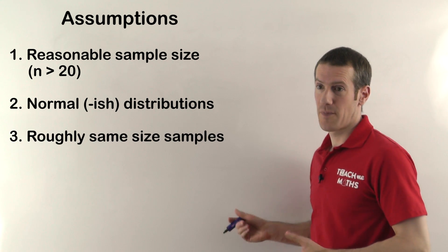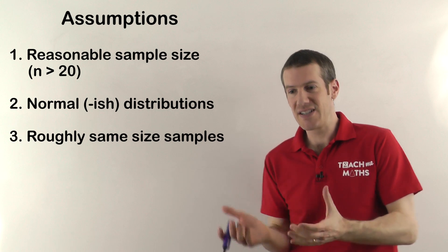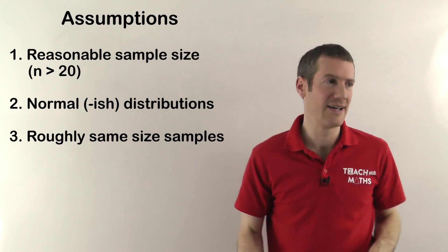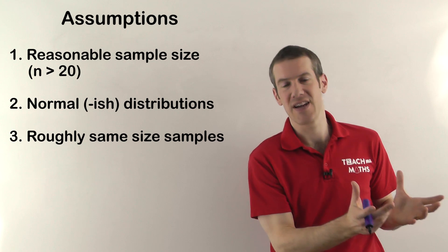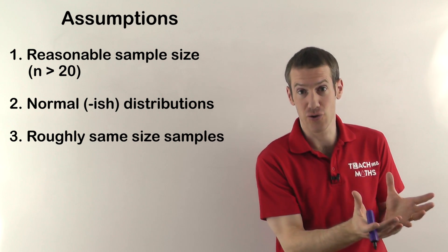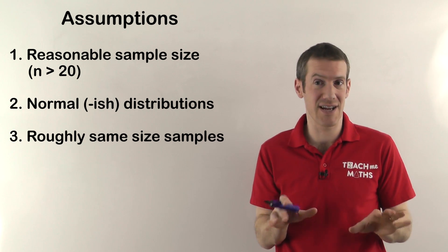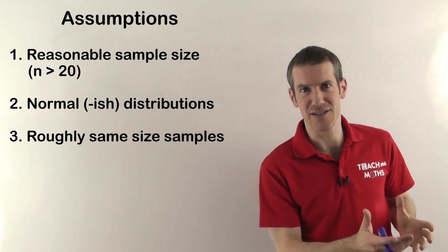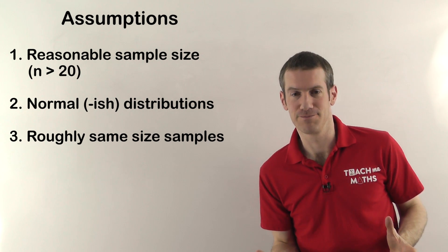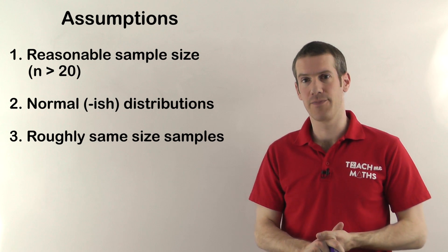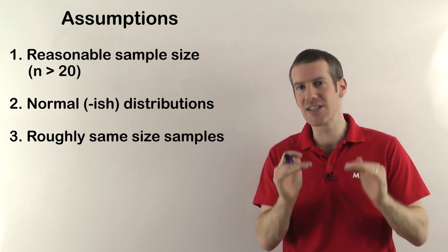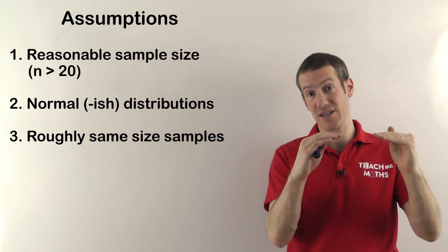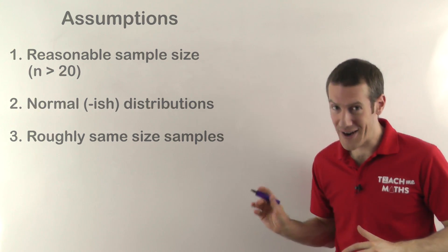The last assumption is that you need roughly the same sample sizes in both groups. If you've got 28 patients in the drug group and 31 in the control group, that's fine because they're roughly the same. But if you've got 30 patients in one group and only 5 in the other, that's no good — it's going to give you very dodgy results. They don't need to be exactly the same, but they need to be roughly the same.